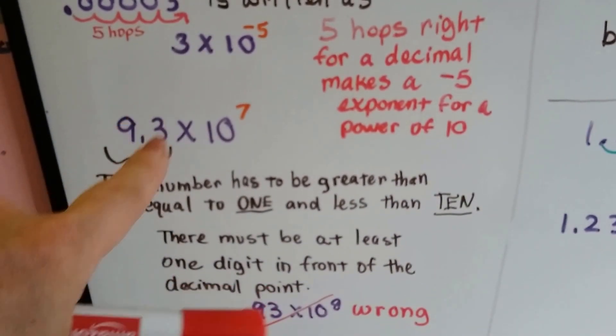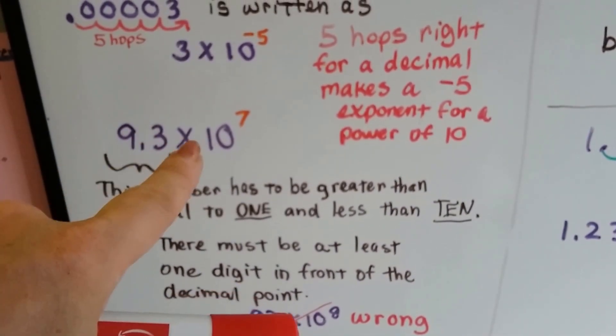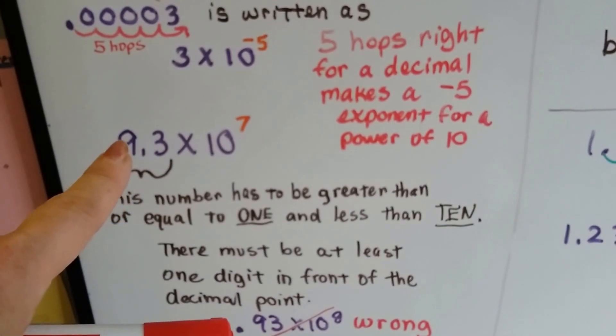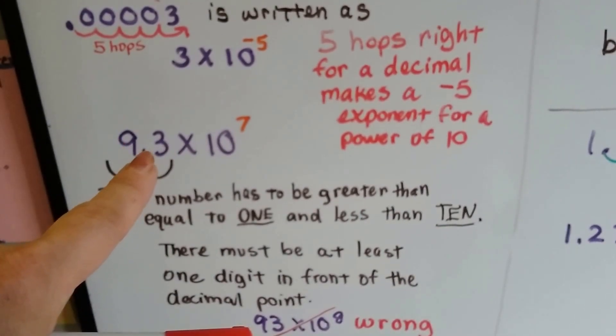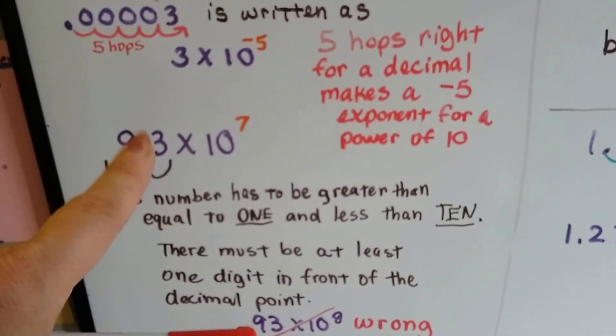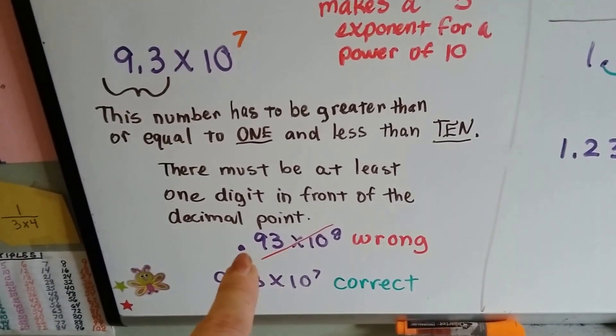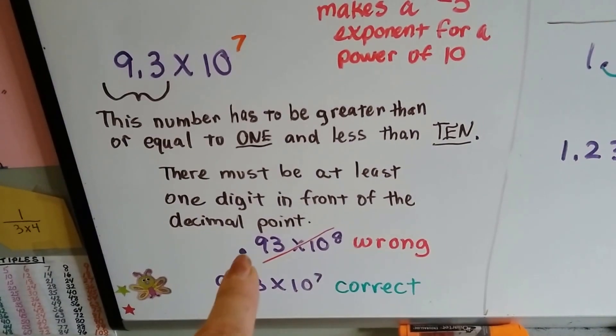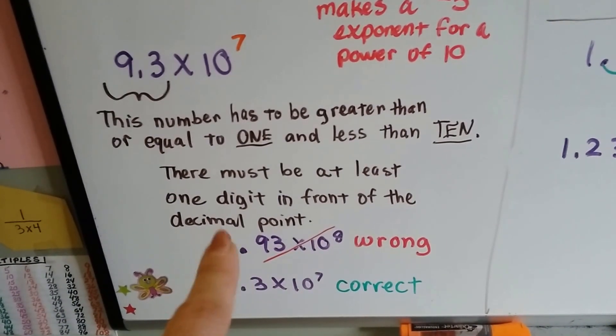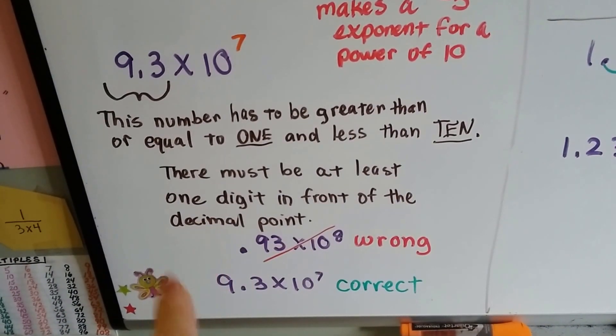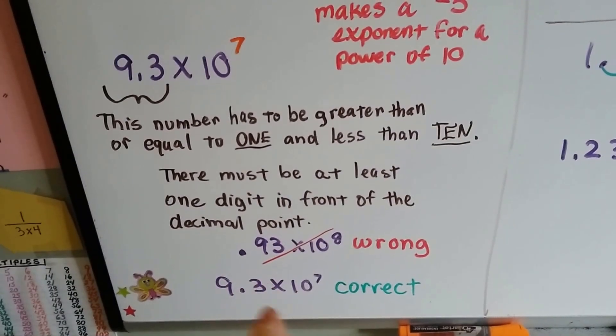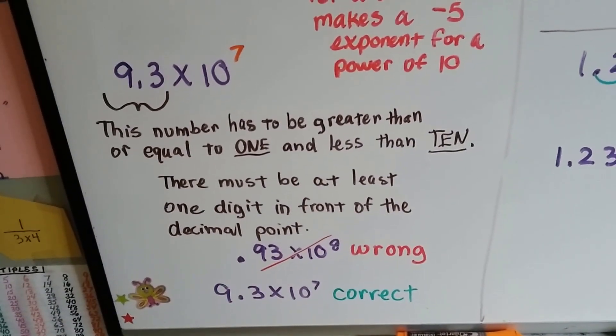We also learned that this number here in front of the multiplication symbol has to have a number and then a decimal point, and it has to be greater than or equal to 1 and less than 10. If we write it with a decimal point in front of the 9, it's wrong. And if we write it with two digits on this side, it's wrong. It's got to have one digit, the decimal point, and the rest of the number for it to be correct.